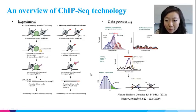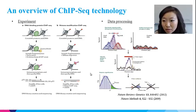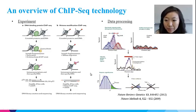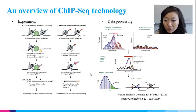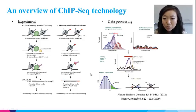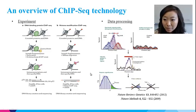DNA is then purified and the protein is removed. The purified DNA will be used to create a sequence library. For a histone modification CHIP-seq experiment, since we are looking for the modification on the histone proteins wrapped by DNA, the material is usually fragmented by MNase digestion.